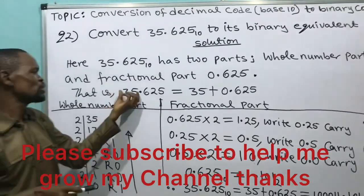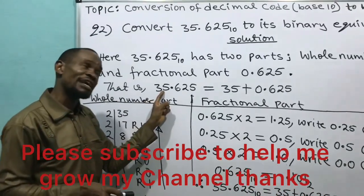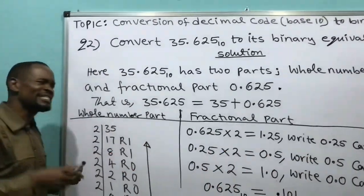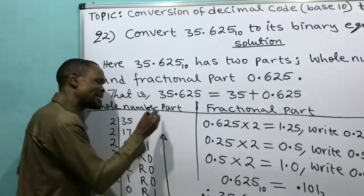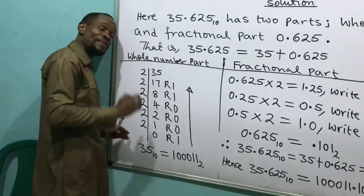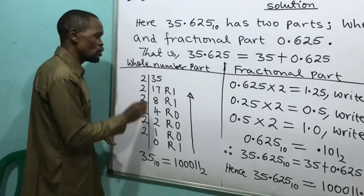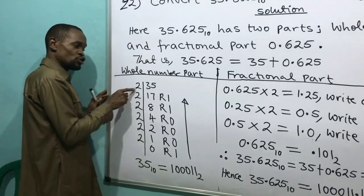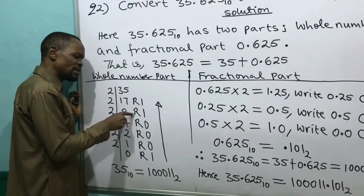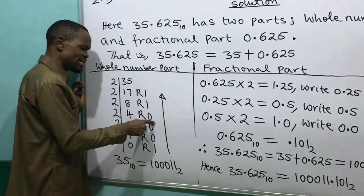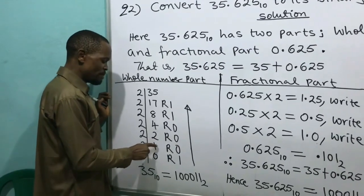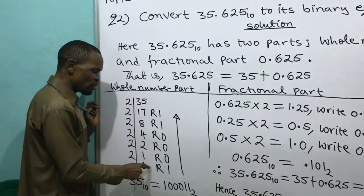I will treat the whole number part first. How? I divide by 2, since I'm converting base 10 to base 2. Look at the whole number part, which is 35. So: 2 divided into 35 gives 17 remainder 1. 2 divided into 17 gives 8 remainder 1. 2 divided into 8 gives 4 remainder 0. 2 divided into 4 gives 2 remainder 0. 2 divided into 2 gives 1 remainder 0. 2 divided into 1 gives 0 remainder 1.